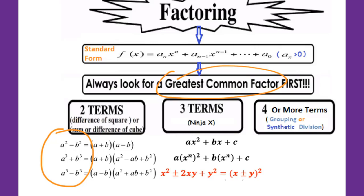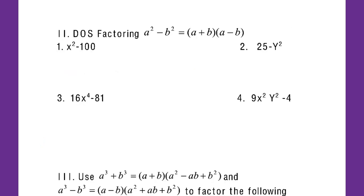Let's look at some examples for these three forms. The first form is called DOS factoring. DOS means Difference of Squares. So you have a squared minus b squared, which equals (a plus b) times (a minus b). Basically, you take the square root of a squared and b squared, then you add, then you subtract, and do multiplication. That's all.